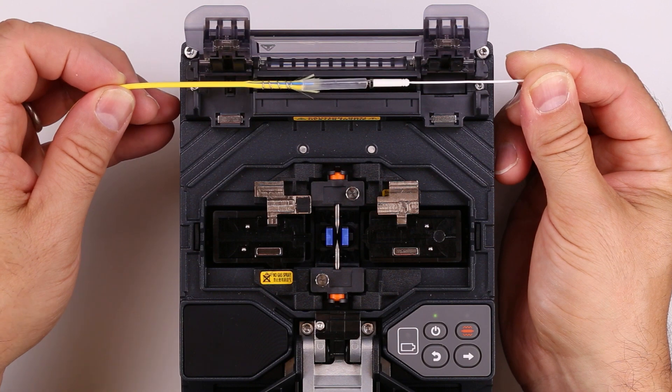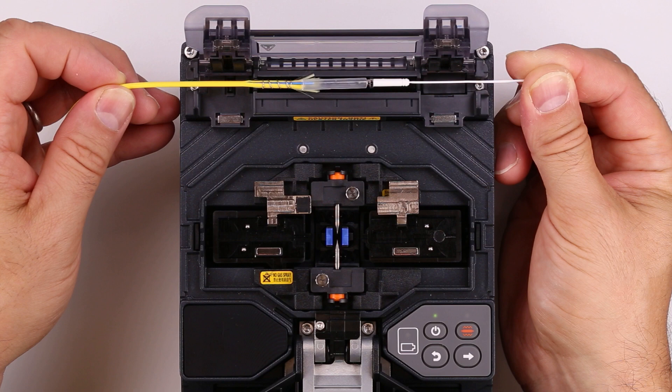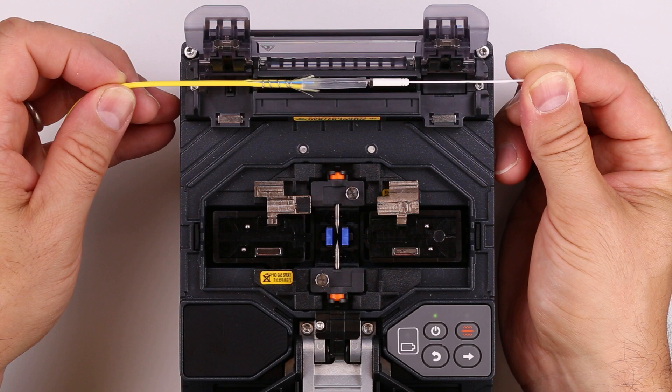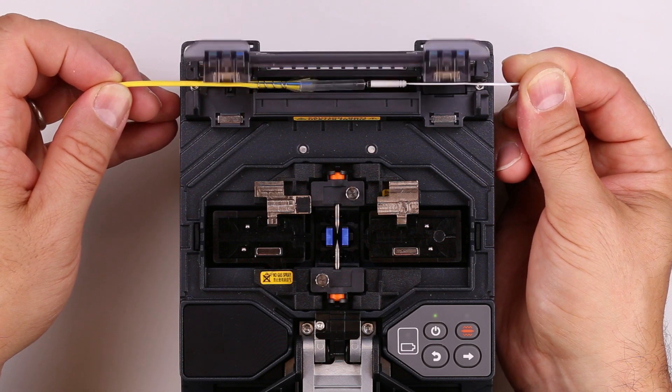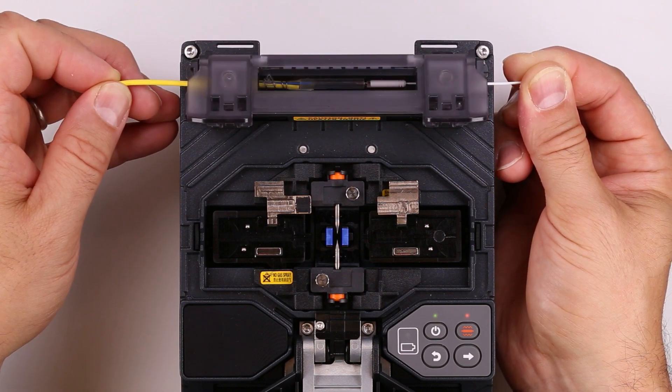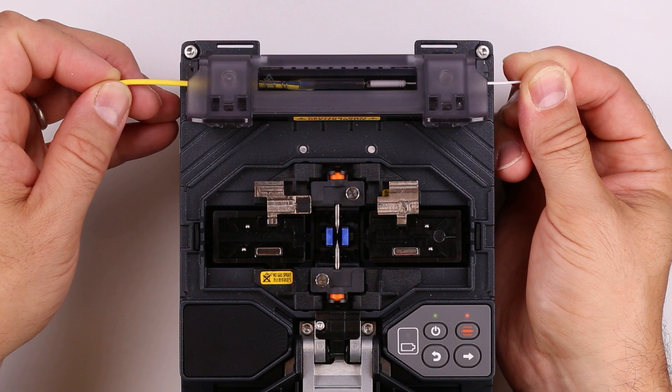While keeping tension on the splice, place the assembly in the heater with the protective tube at the center. Place the right side first, then left. Make sure the protective sleeve does not move. The heater lid will close when the assembly hits the bottom of the heater. The heating cycle starts automatically when the lid closes.